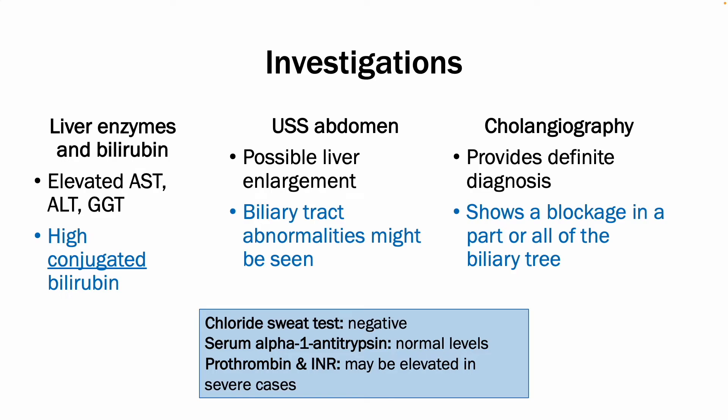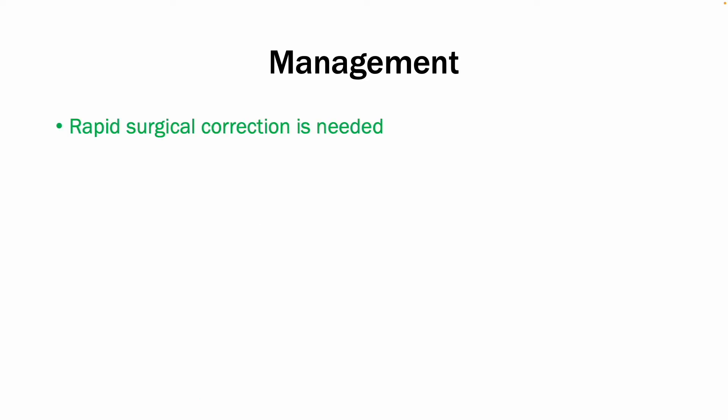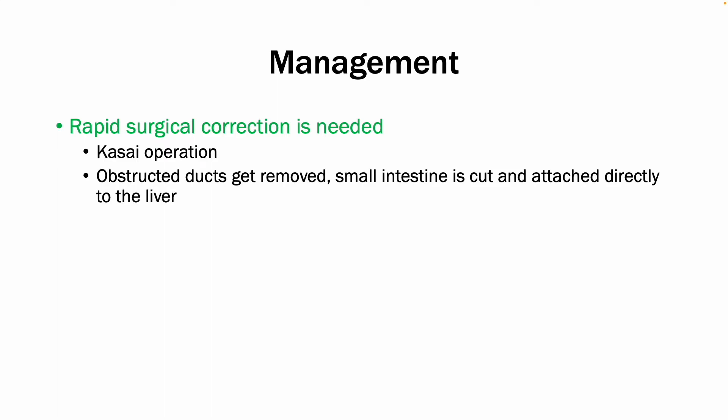In terms of management, surgical correction is necessary via the Kasai operation, where the obstructed ducts are removed. The small intestine is cut and connected directly to compensate — part of it connects to deliver bile flow directly to the liver, bypassing the absent extrahepatic biliary ducts.